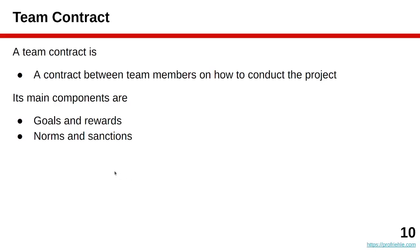The team contract is an agreement between team members on how you want to go about the project and how you want to work with each other. As a self-organizing team, you choose how to work within the limits set by Scrum and agile methods. Within the team contract, you should write down in an online document: the goals of what you want to achieve and how you reward yourself, the norms of good behavior, and the sanctions if people misbehave or violate the team contract.